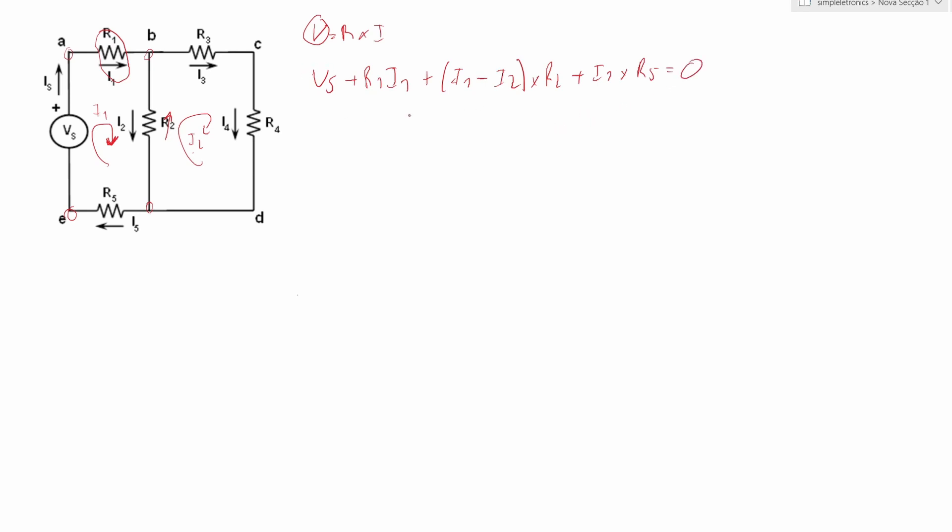So we know this right now. So let's do it for I2. Now we know that I2 is going up and I1 is going down. So I2 minus I1 multiplied by R2 plus I2, forget these currents, multiplied by R3 plus I2 multiplied by R4 is equal to 0.